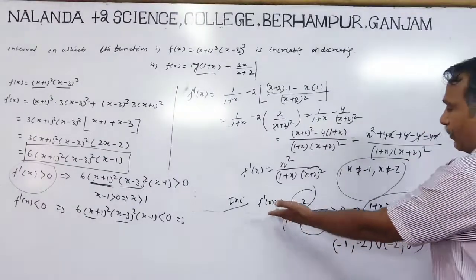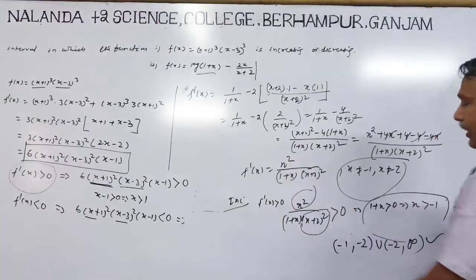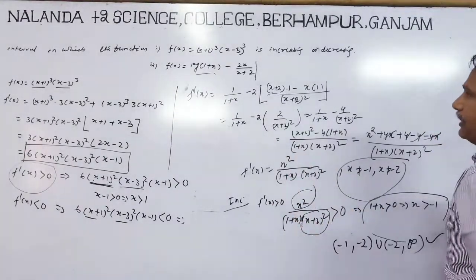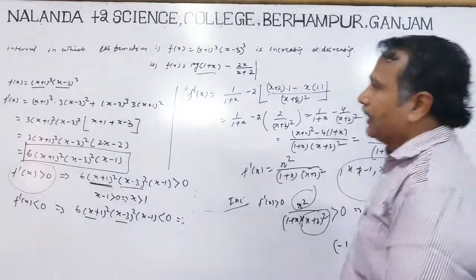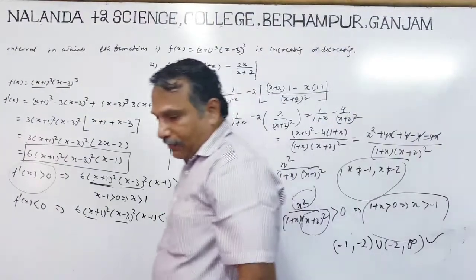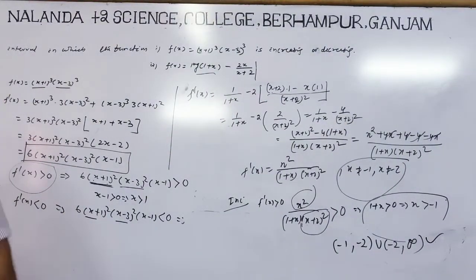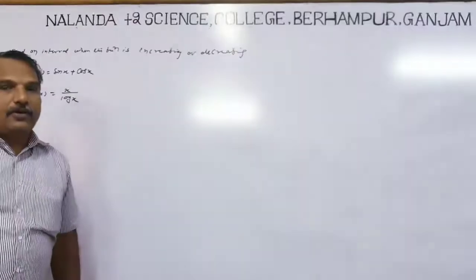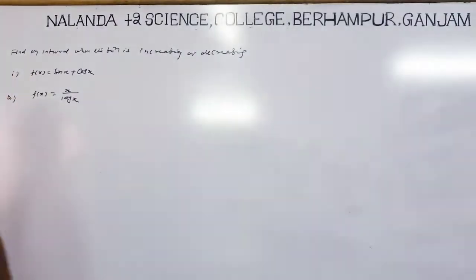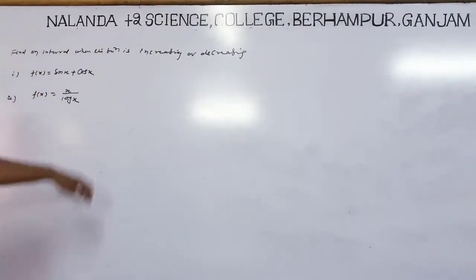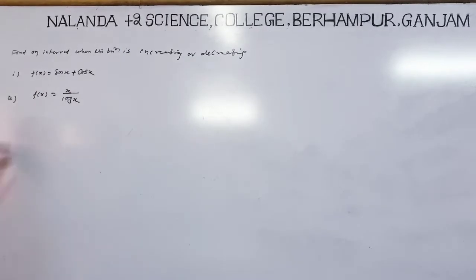Similarly, for decreasing function, f'(x) less than 0, which gives x less than -1. So the decreasing interval is where x is less than -1. These two are examples of finding the interval of increase and decrease.